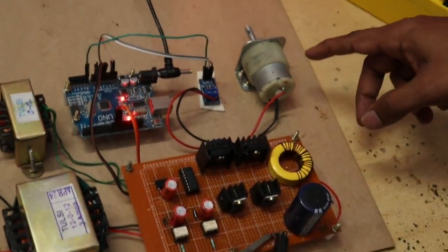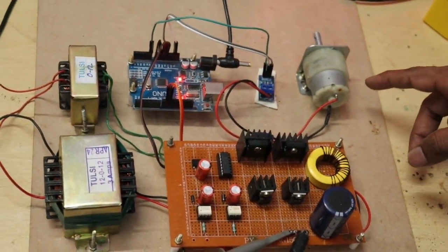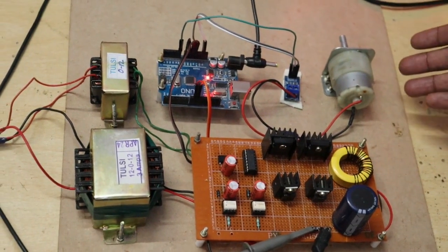And the speed of the motor is also increased. By controlling the DC voltage, we control the motor speed.